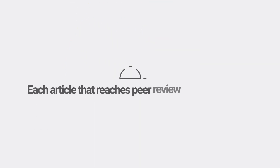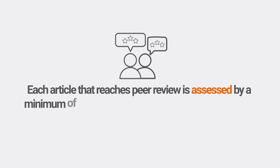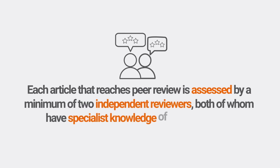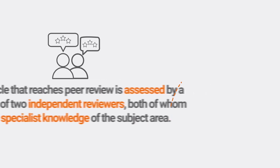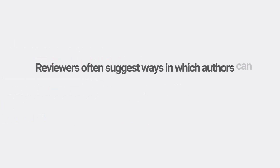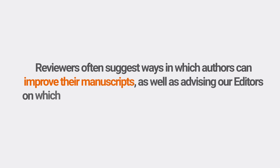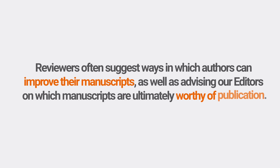Each article that reaches peer review is assessed by a minimum of two independent reviewers, both of whom have specialist knowledge of the subject area. Reviewers often suggest ways in which authors can improve their manuscripts, as well as advising our editors on which manuscripts are ultimately worthy of publication.